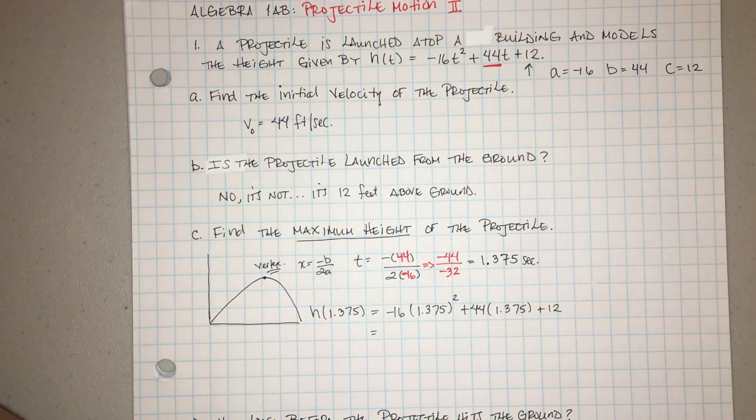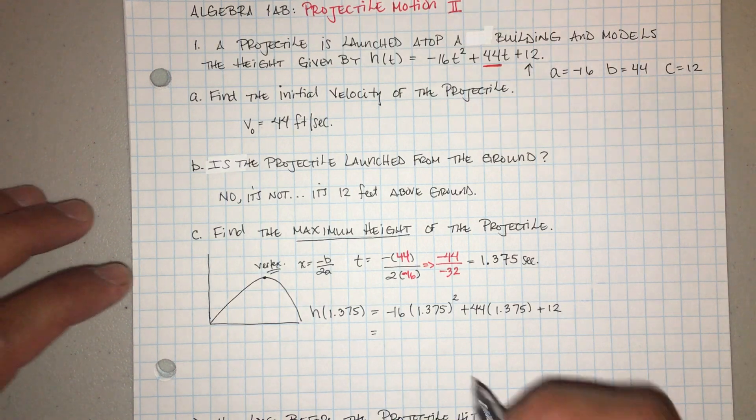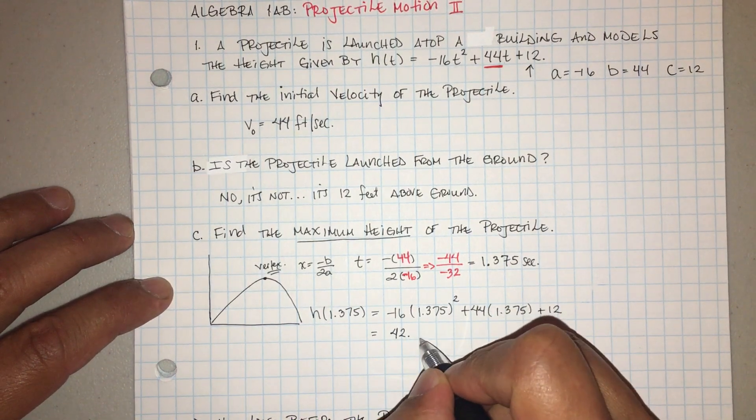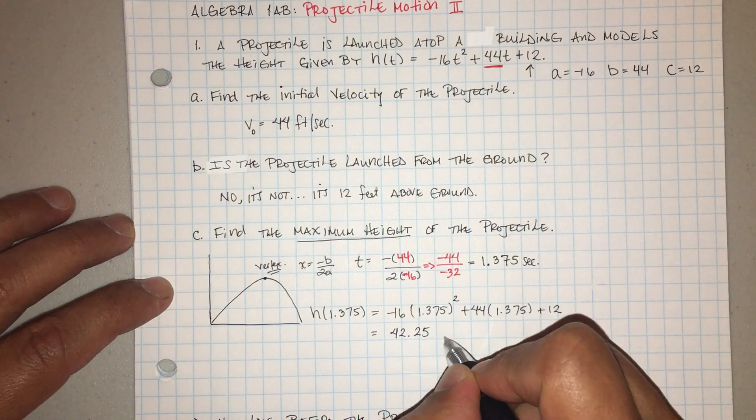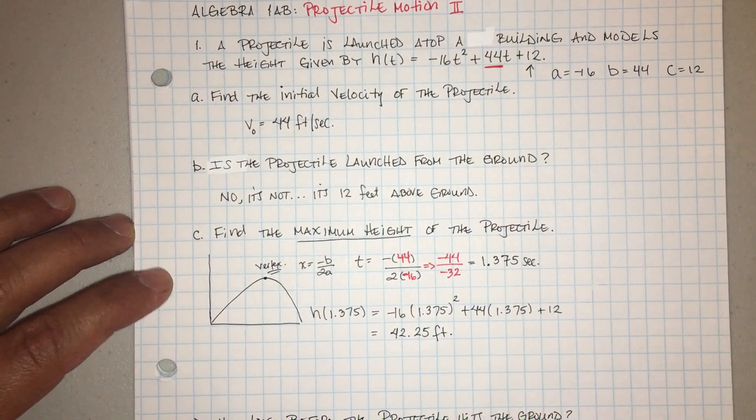And then plus 12. And that's going to give me, eso me va a dar, cuarenta y dos punto veinticinco, 42.25, and that would be in feet. Okay, va a ser pies.